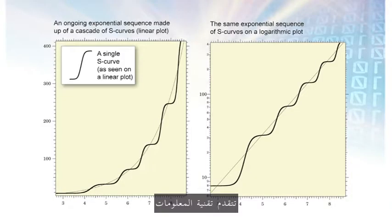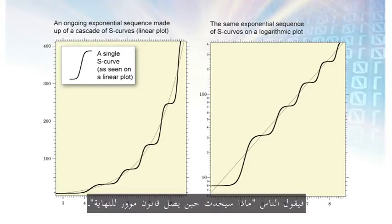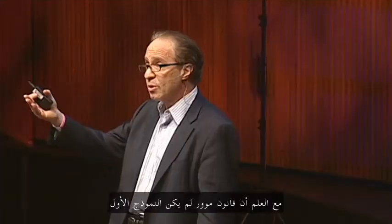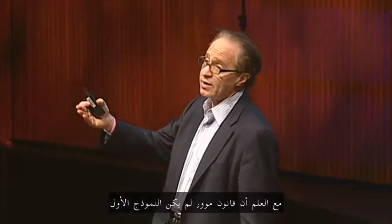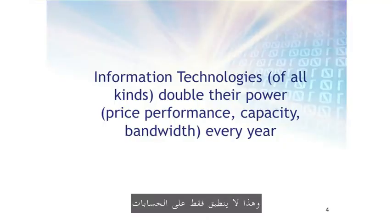Information technology progresses through a series of S-curves, where each one is a different paradigm. People say, well, what's going to happen when Moore's Law comes to an end, which will happen around 2020? We'll then go to the next paradigm. And Moore's Law was not the first paradigm to bring exponential growth to computing — the exponential growth of computing started decades before Gordon Moore was even born, and it doesn't just apply to computation.